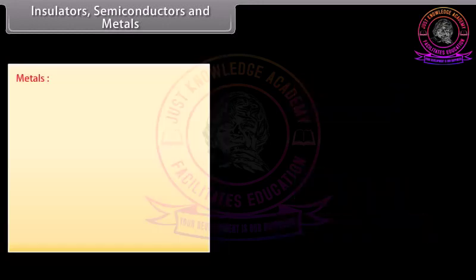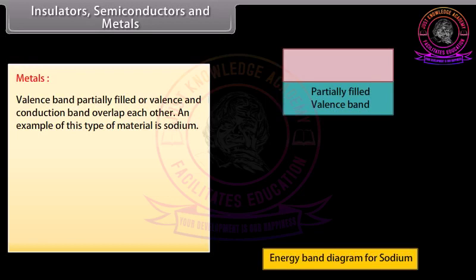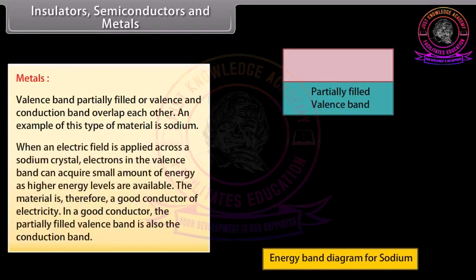Metals have a partially filled valence band, or the valence and conduction bands overlap each other. An example is sodium. When an electric field is applied across a sodium crystal, electrons in the valence band can acquire a small amount of energy as higher energy levels are available. The material is therefore a good conductor of electricity. In a good conductor, the partially filled valence band is also the conduction band.